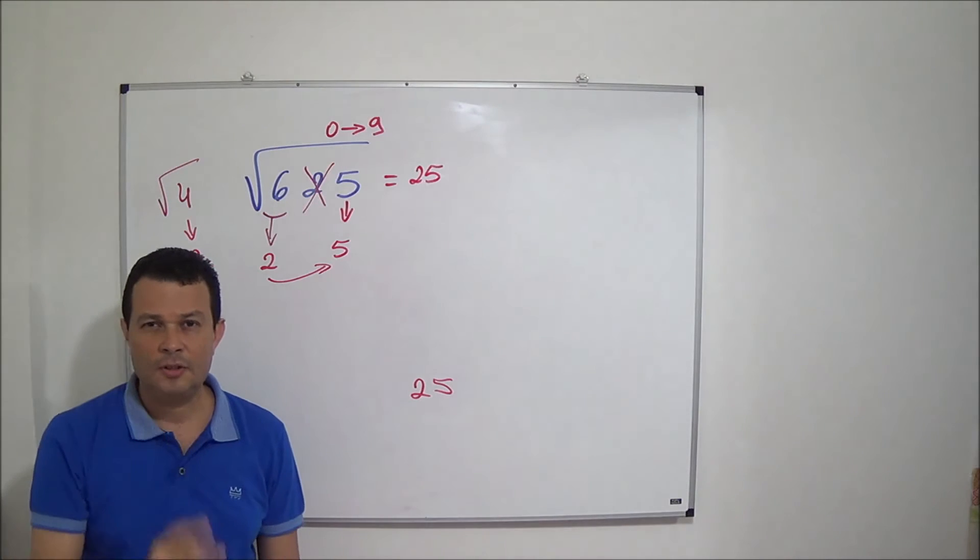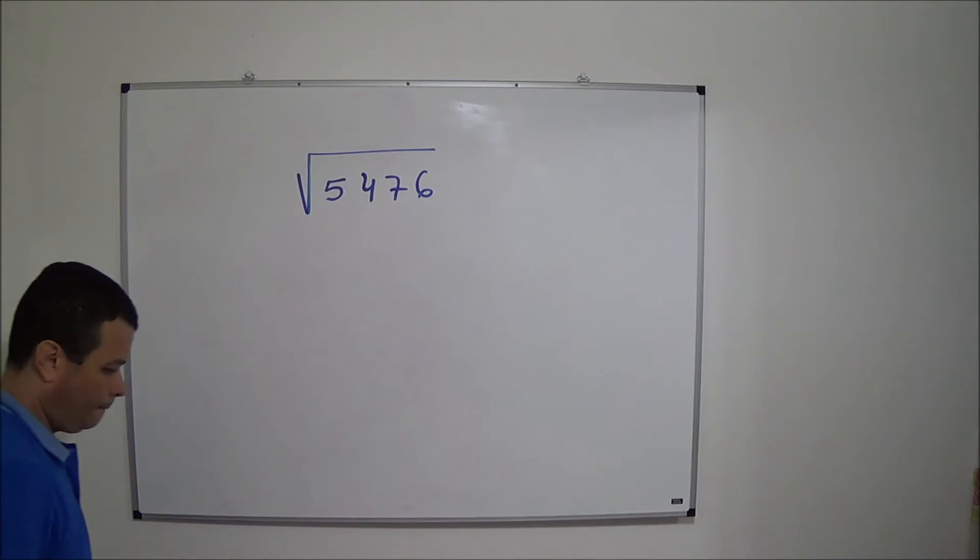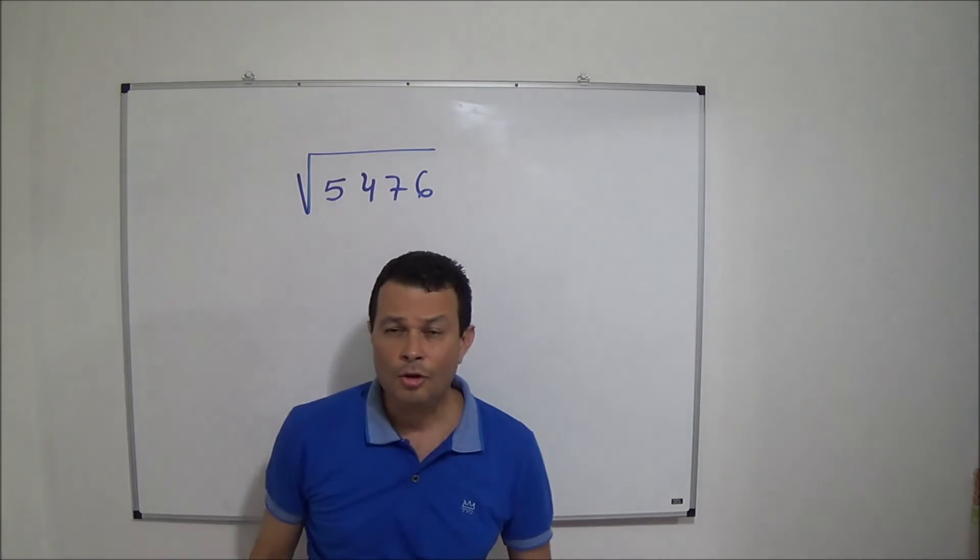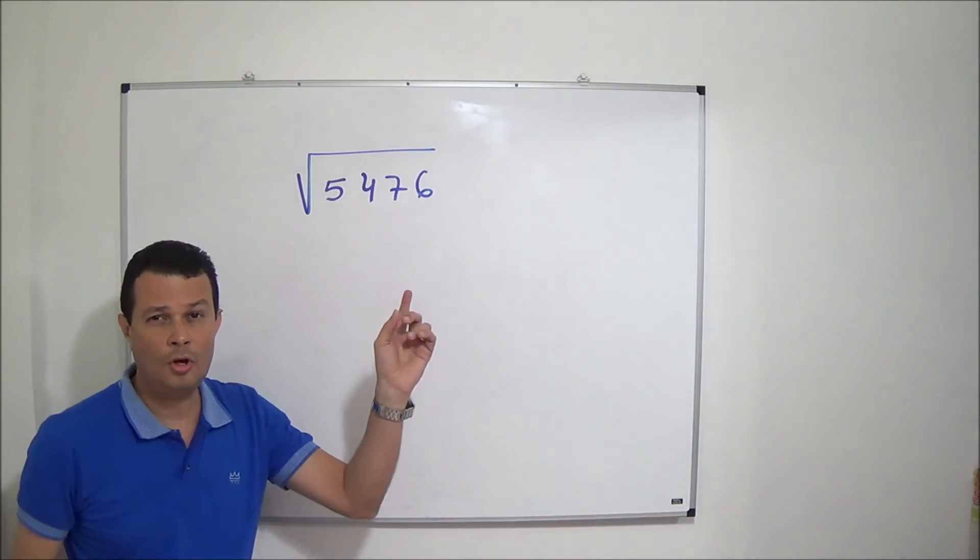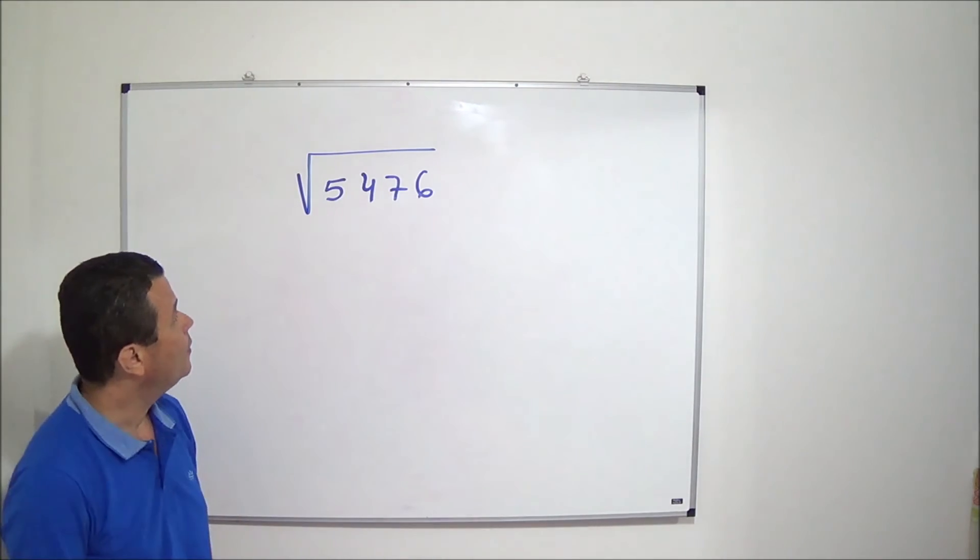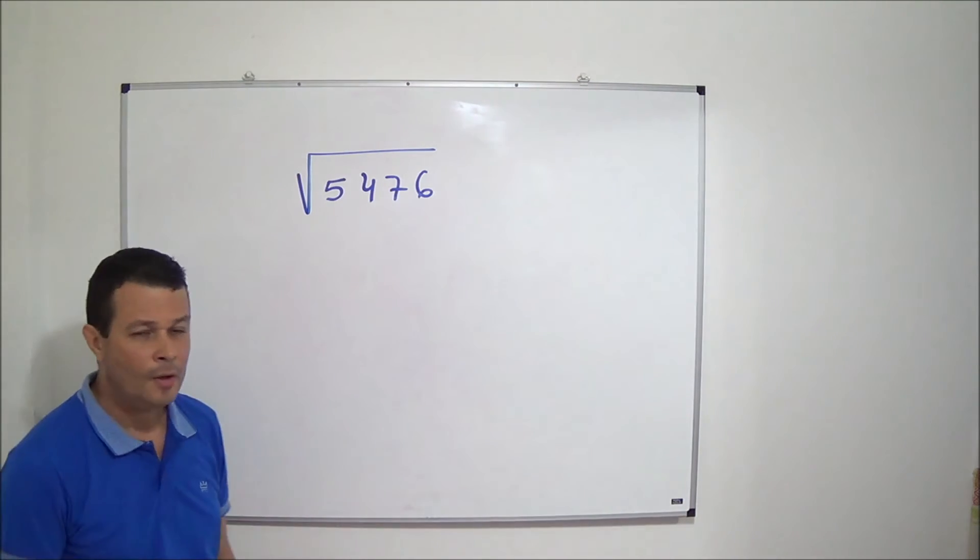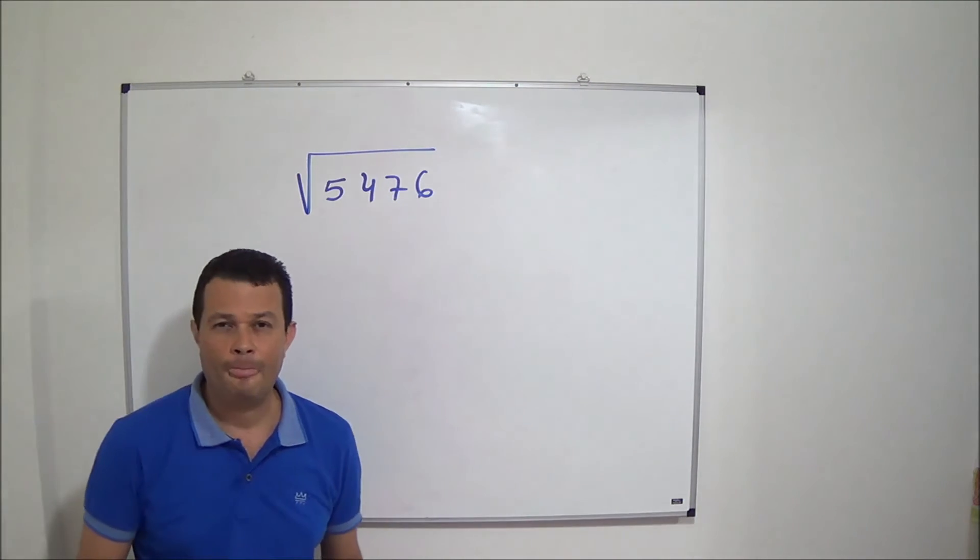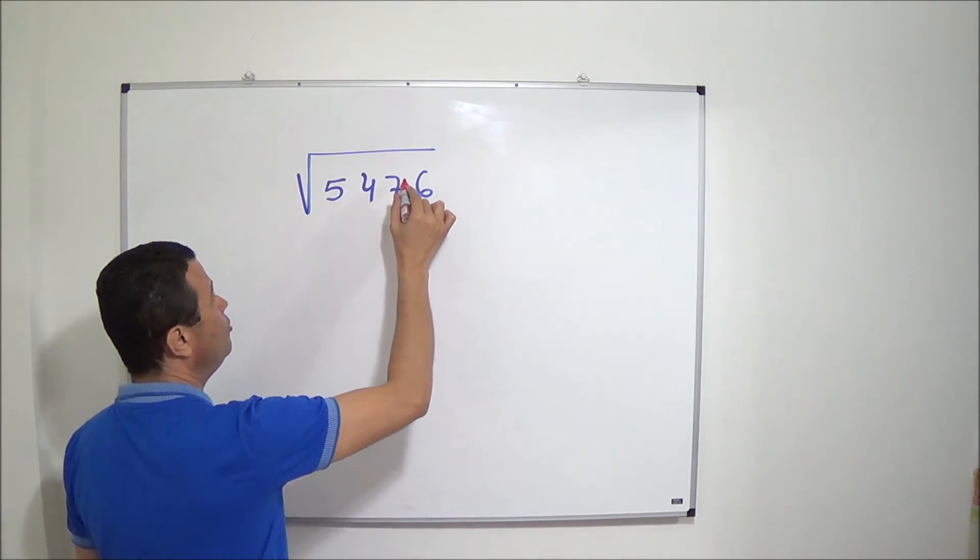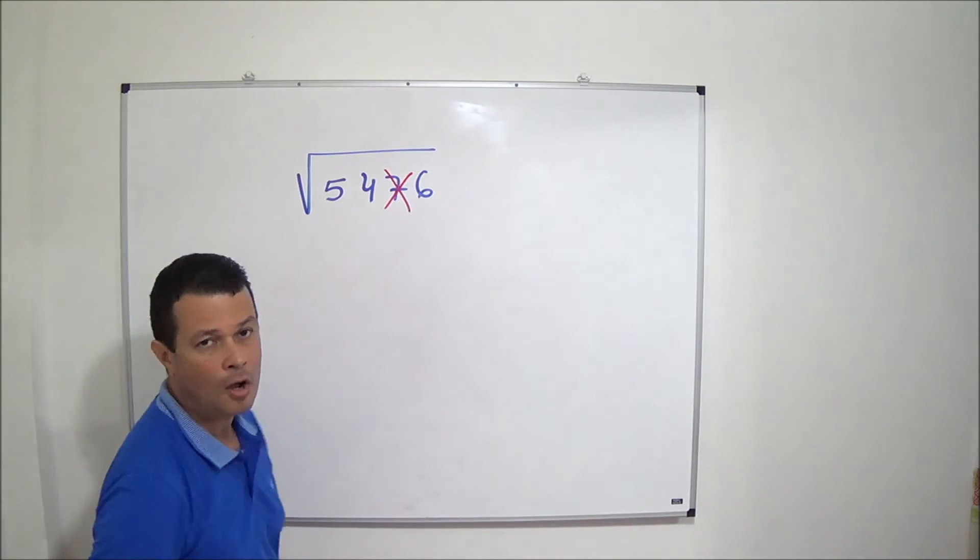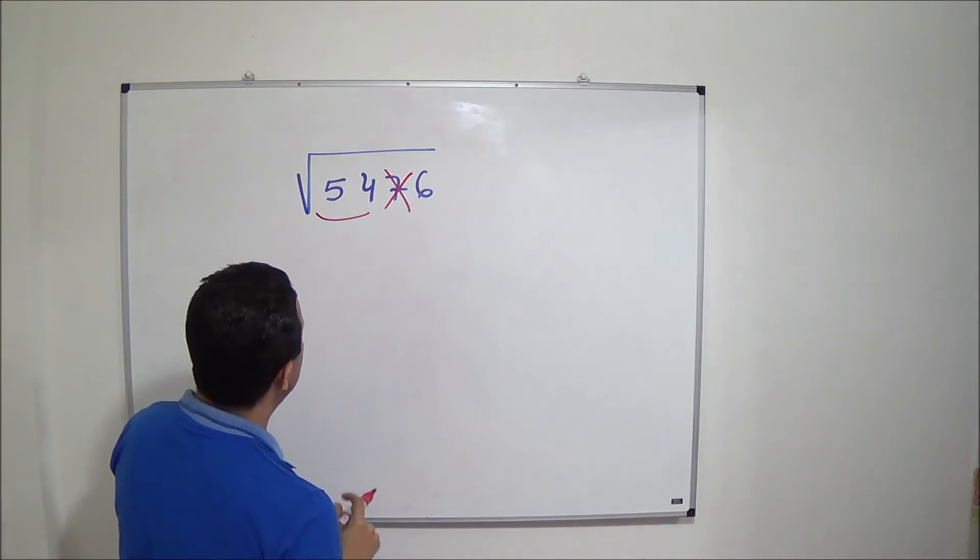Let's see the second example. Square root of 5476. As I said before, first we have to forget temporarily the penultimate algorithm of the number. We have here number 54.